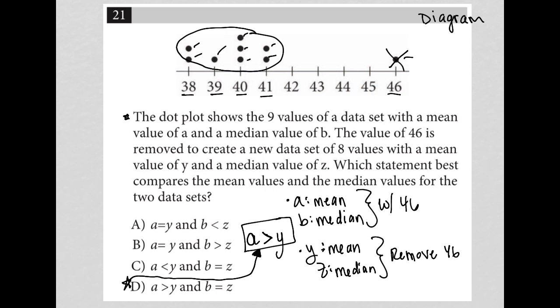If I'm uncertain, I have time now to go back to my calculator and see if I'm correct about my assumption. I'm going to figure out what A is and what Y is to make sure that A is in fact greater than Y. The way we find the mean is by adding up all the data points. I'm in my calculator right now, adding up 38 plus 38.